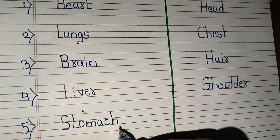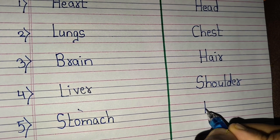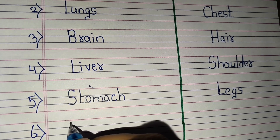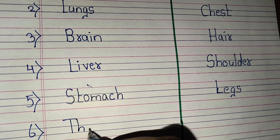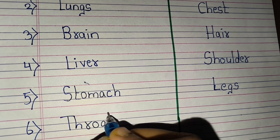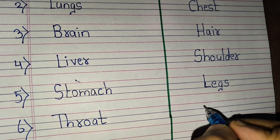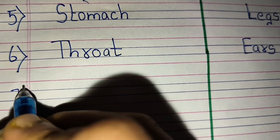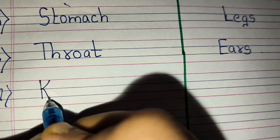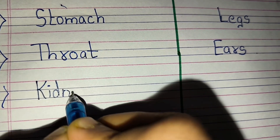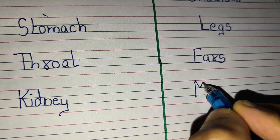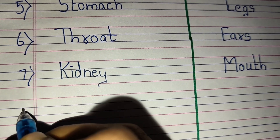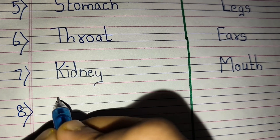Fifth internal organ is stomach. External organ: legs. Sixth internal organ is throat. External organ is ears.